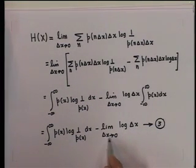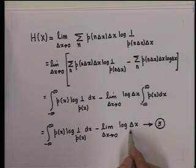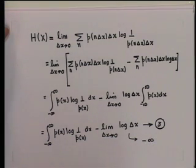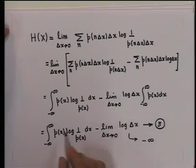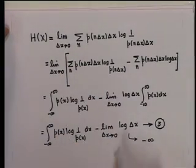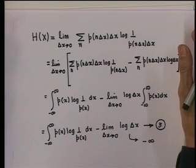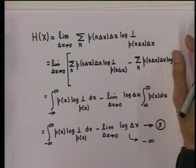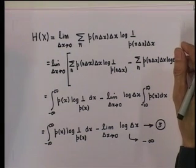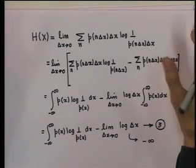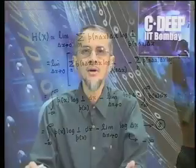Now, in the limit as delta x tends to 0, log of delta x will tend to minus infinity. So it appears that the entropy of a continuous random variable is infinite. This is quite true — the magnitude of uncertainty associated with a continuous random variable is infinite. This fact is also apparent intuitively. A continuous random variable assumes an uncountably infinite number of values and hence the uncertainty is on the order of infinity.